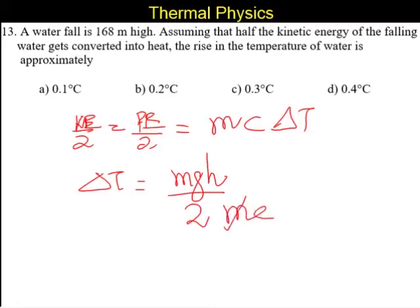So M, M can be removed. So it is simply G H by 2 C.